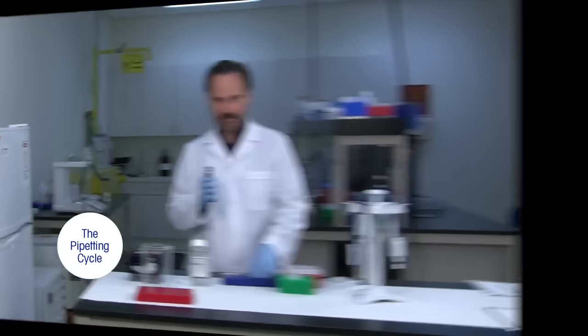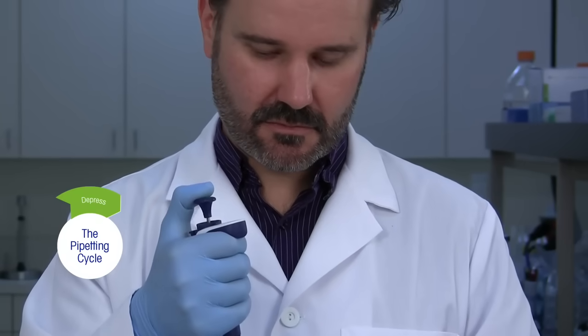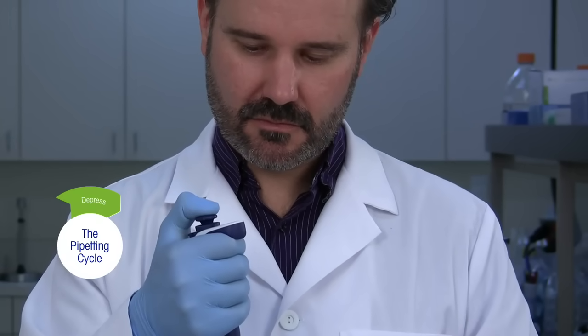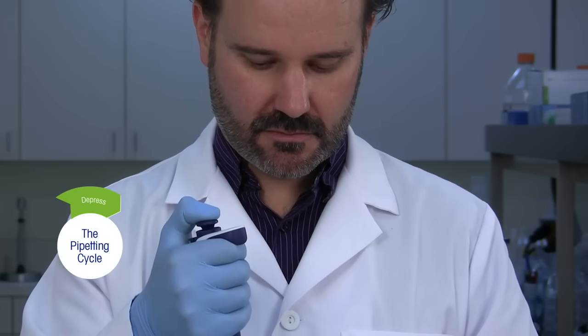Step 1. Starting at the pipet's home position, push down on the plunger button until you feel it reach the first stop, then hold.